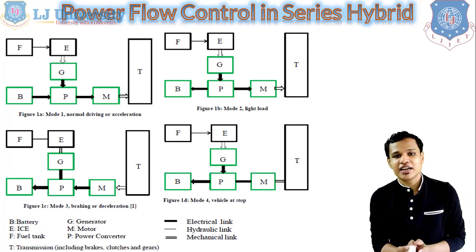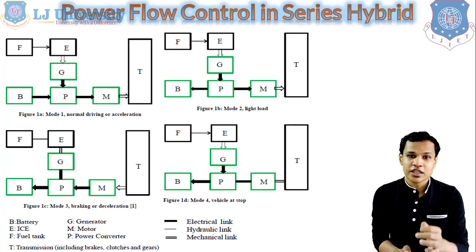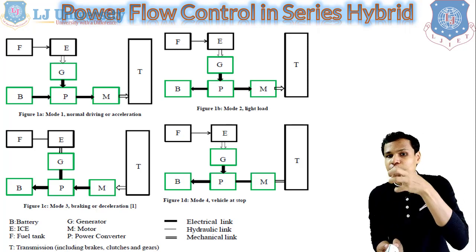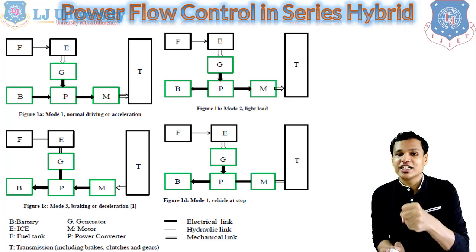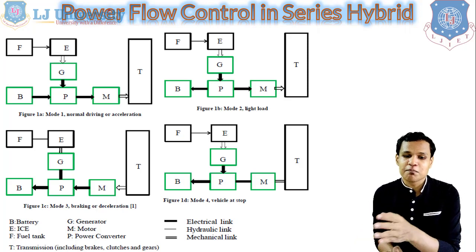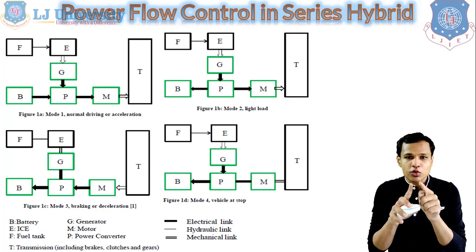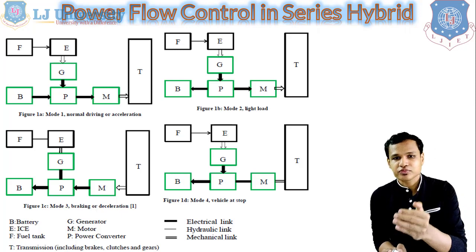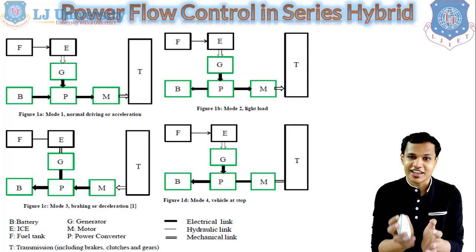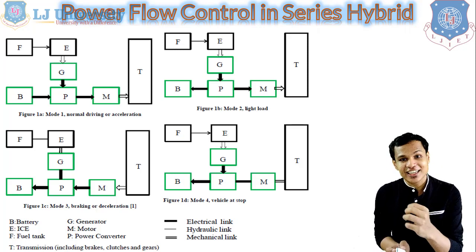In mode 2, shown in figure 1B on the right side, the mode shows the light load condition. In the case of light load, the power being generated from the engine is more than the power required to keep the vehicle running. So the extra power generated from the engine will be transmitted back to the battery with the help of the power converter. At the P block you can see arrows going in two opposite directions — the main power goes to the electric motor which transmits power to the transmission system, while the extra power charges the battery.